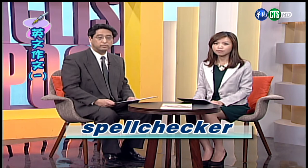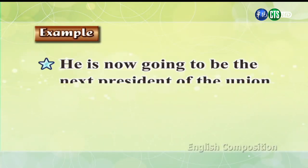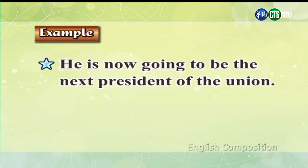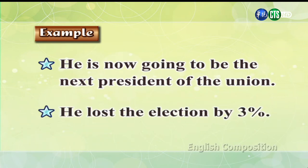And one thing that you really have to remember when you're using a spell checker is that you can't count on it all the time. Because sometimes you spell a word wrong, but it's actually a different correctly spelled word. 好，但是各位同學要千萬記得，我們不能完全都靠這個拼字文法檢查的功能來幫我們找到所有的錯字。因為呢，其實有時候你會發現你一個拼錯的字，以字型而言它可能是另外一個正確的單字。 Right, so let's take a look at an example here. So we have this sentence: He is now going to be the next president of the union. 好，我們看到這個句子，它說，他現在將要成為下一個我們這個組織的總裁。 And you can see every word is spelled correctly there.